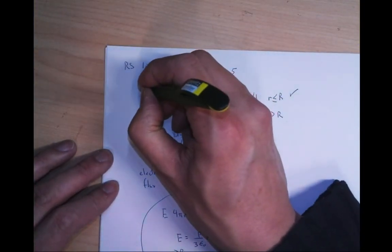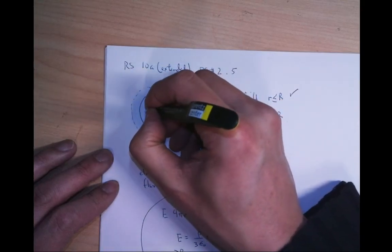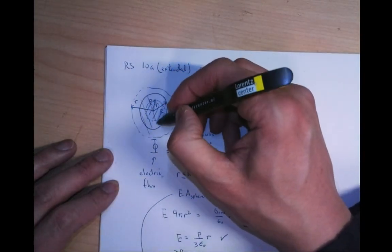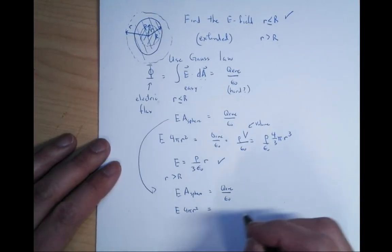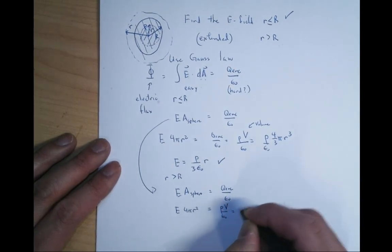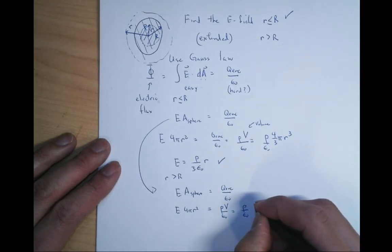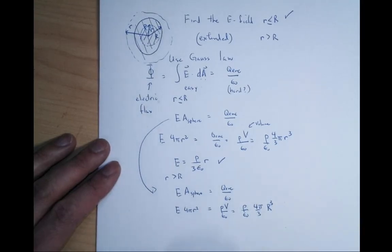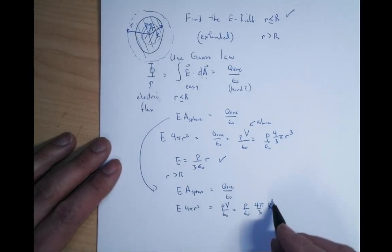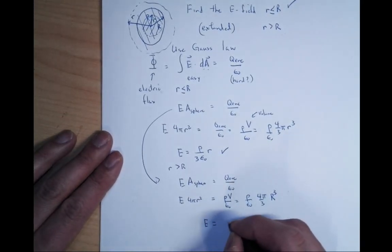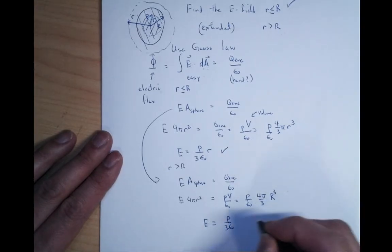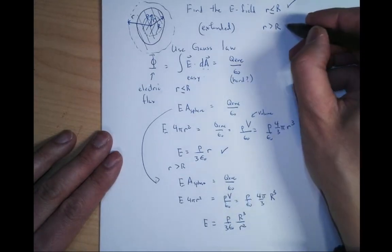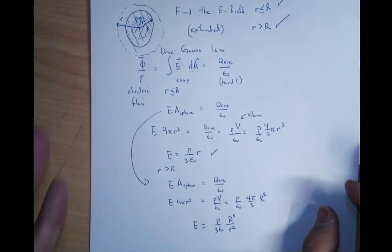The charge enclosed is just the charge up to capital R. So Q enclosed is rho times the volume, which is rho over epsilon naught times (4π/3)R³. The 4π's cancel. Now this little r² will not cancel with big R³, so we have E equals rho over 3·epsilon naught times R³ divided by r². That is the electric field on the outside.